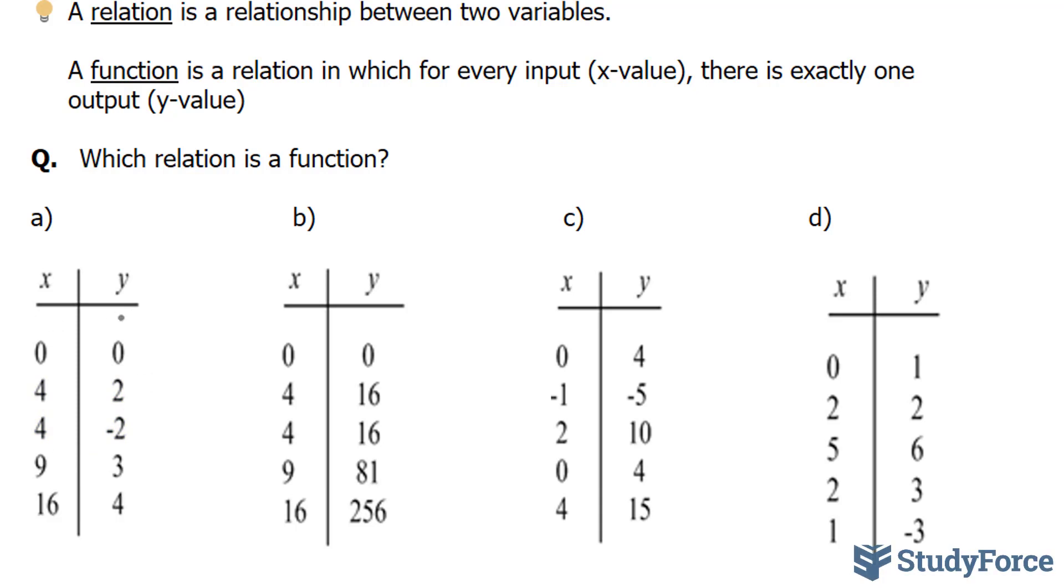Moving on to b, once again, we have a 4 and a 4, but this time they both represent 16. So we can conclude that this is a function because both of these 16s are the same, and they represent the same x.